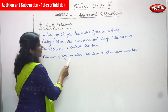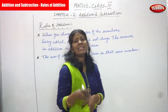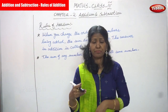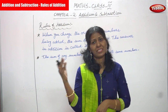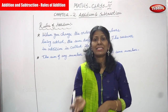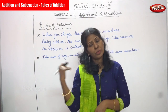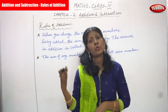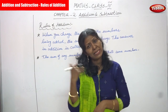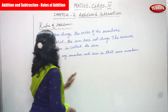The next rule is: the sum of any number and 0 is the same number. For example, 10 plus 0 equals 10; 15 plus 0 equals 15; 5 plus 0 equals 5; 50 plus 0 equals 50; 100 plus 0 equals 100; 1000 plus 0 equals 1000; even 10,000 plus 0 equals 10,000.